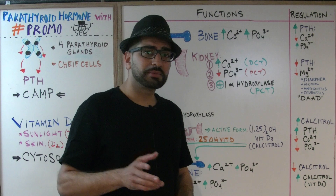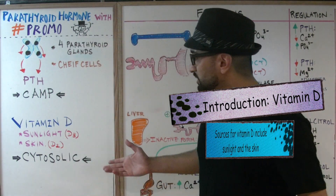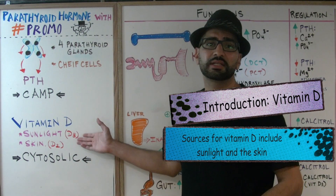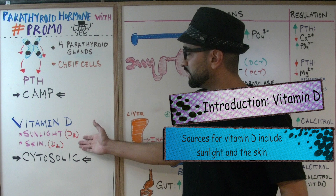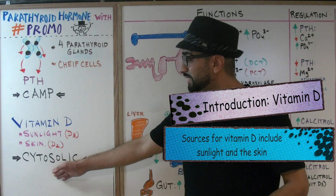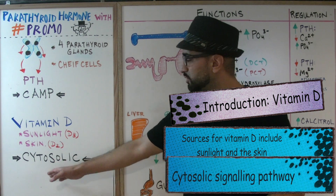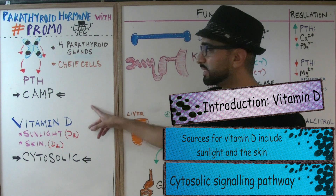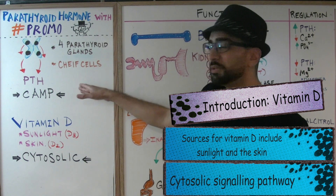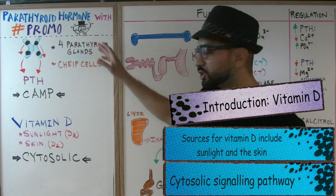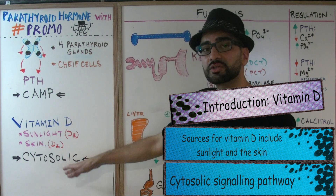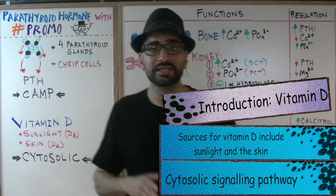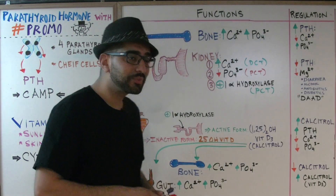Now let's move on to vitamin D. As many of you know, we have two main sources: sunlight and the skin. Vitamin D's signaling pathway works through a cytosolic signaling pathway — keep this difference in mind: cyclic AMP for PTH, cytosolic signaling pathway for vitamin D.